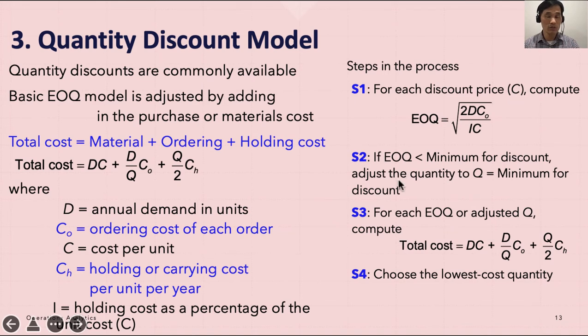Step three is for each EOQ or adjusted Q, compute total cost equals DC plus D over Q times C_O plus Q over 2 times C_H. Then you'll be able to compare this total cost with other total costs and pick the best one, which is choosing the lowest cost quantity. You could have breaks for several levels: zero to five, five to ten, ten to fifteen, and so forth. At that time you're going to incur different types of total costs, and you have to choose which one is the lowest for your business.